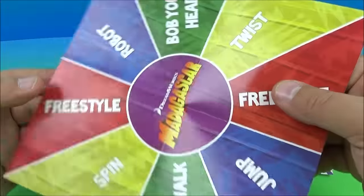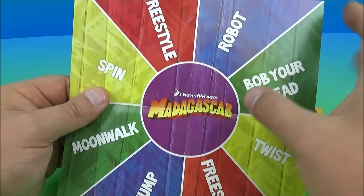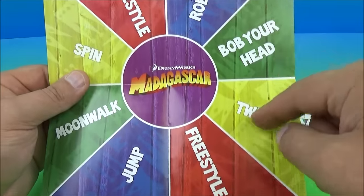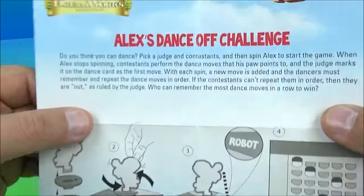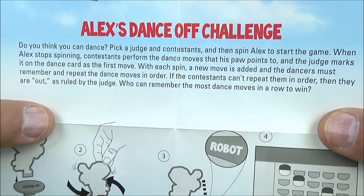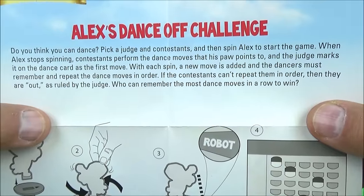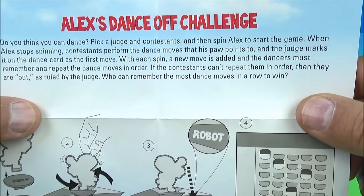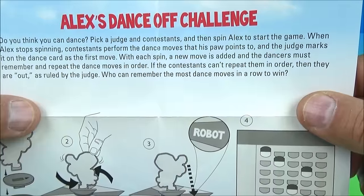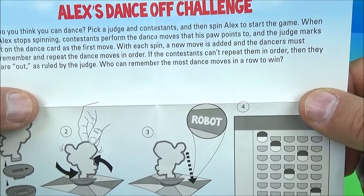Here is the scorecard and here is the other sheet. This is actually the page where you spin Alex on. You got different things here: bob your head, twist, freestyle, jump, moonwalk, spin, freestyle. And on the back it reads the instructions: Do you think you can dance? Pick a judge and contestants, then spin Alex to start the game. When Alex stops spinning, contestants perform the dance moves that his paw points to.